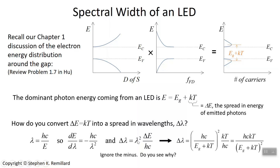Lambda squared is replaced with hc over energy squared, where the energy is, we'll just use the dominant energy, the most likely energy, energy gap plus kT. Replace delta E with kT and simplify.